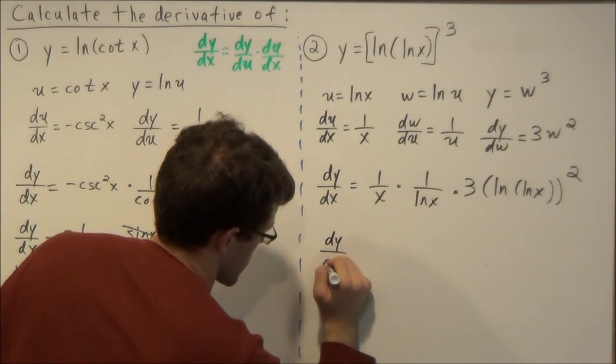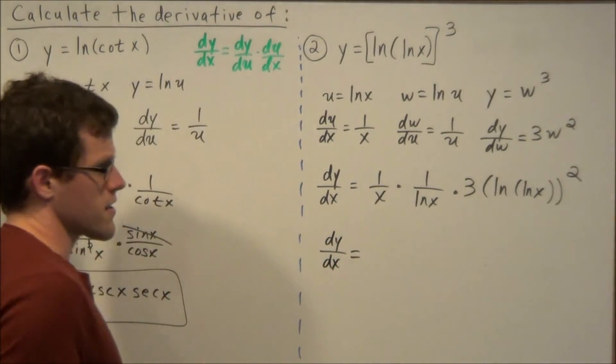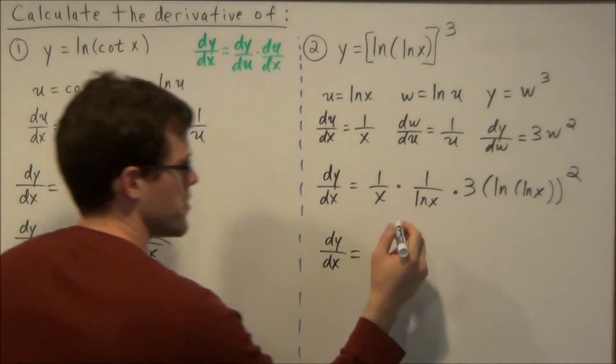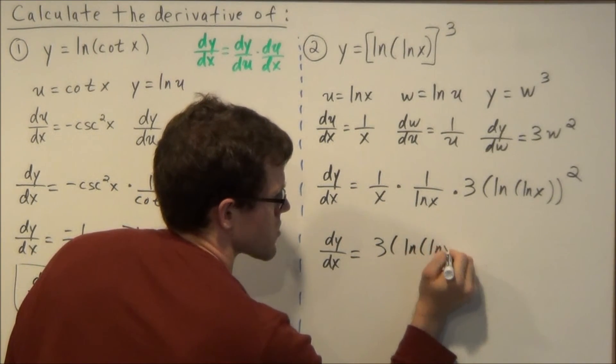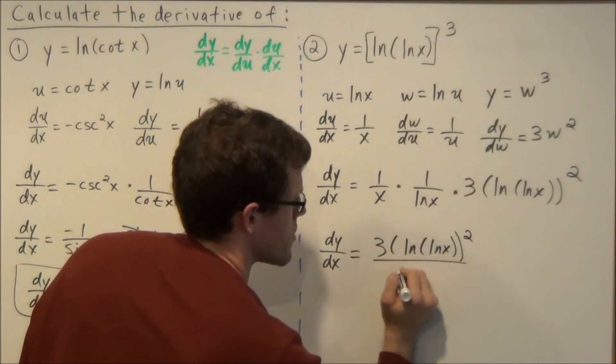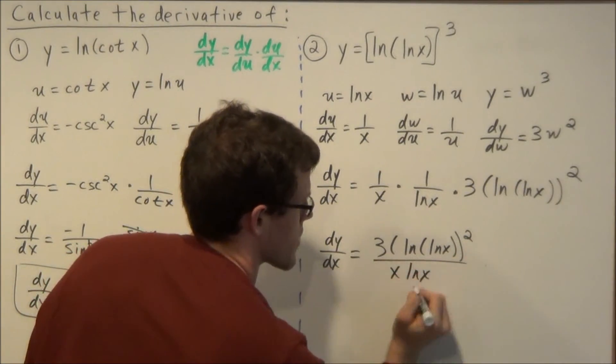So our final answer for the second example would be dy dx equals, and in the numerator we have three natural log natural log of x squared over x natural log of x.